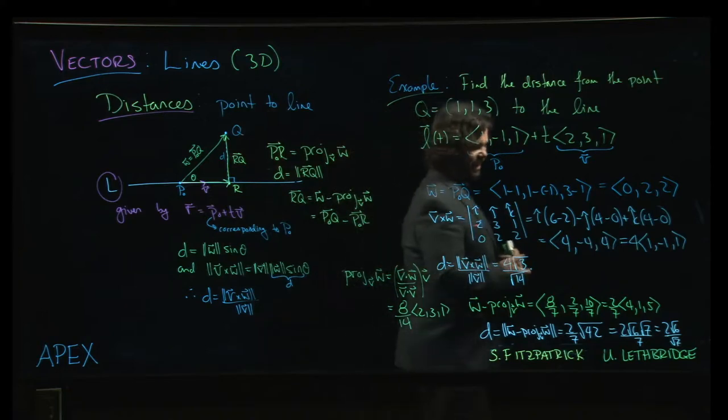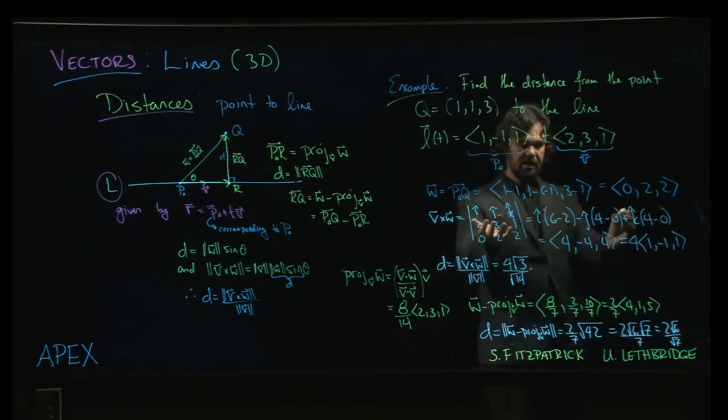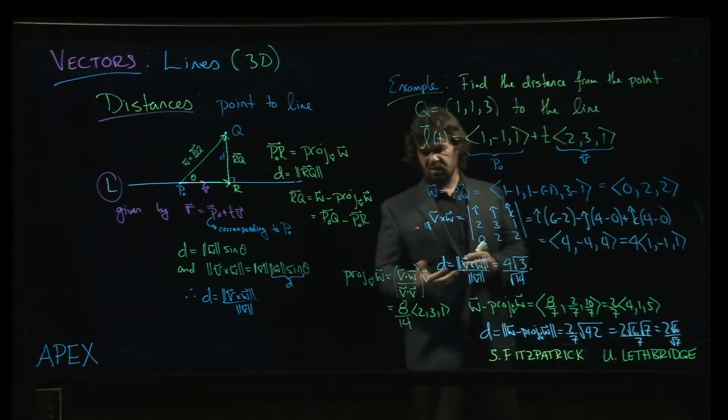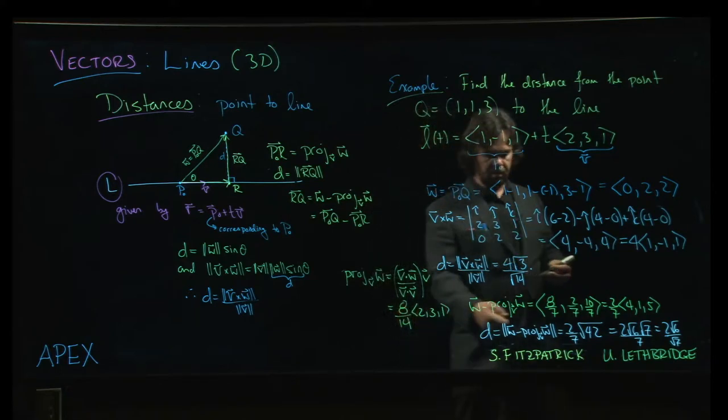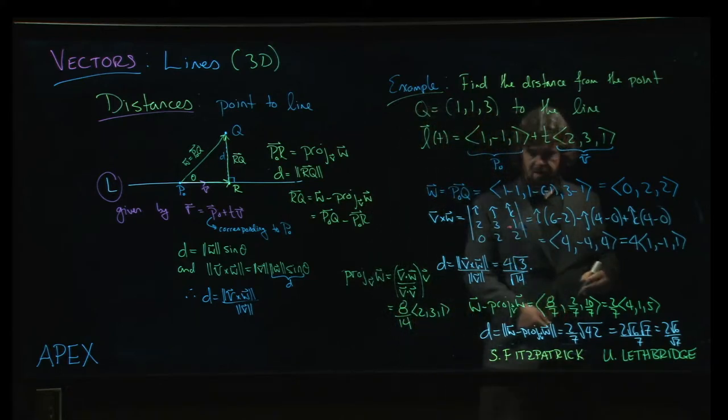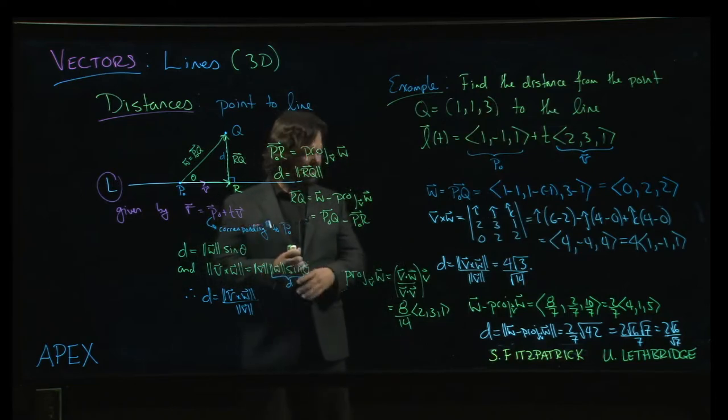So either method works. You choose what makes more sense to you. Memorize a formula and calculate a cross product, or, I guess you still have to memorize a formula to do projection, but it's one you already had to learn, perhaps. So here maybe the hard work is you gotta do the projection, which is not so bad. The harder work is probably doing the subtraction. Subtracting is hard. It's fine.